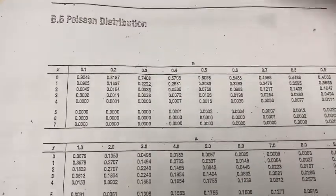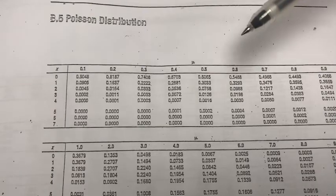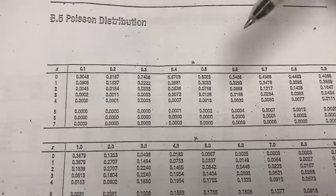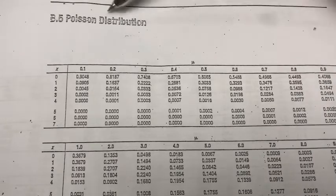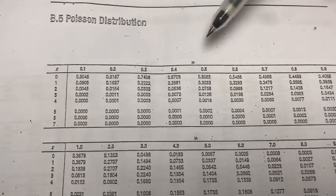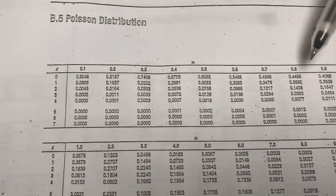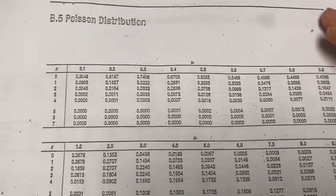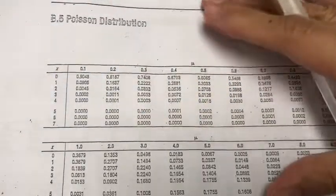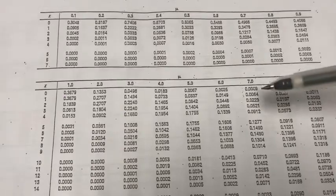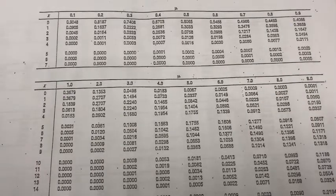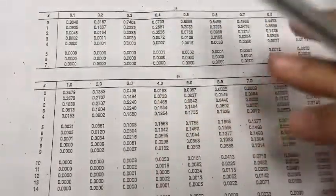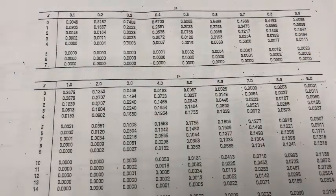Here is the Poisson distribution table, which looks different from the binomial table. For Poisson, we are not concerned with n or pi — only with mu, the rate of occurrence. The table provides several values of mu from 0.1 up to 0.9, and different values of x. As long as we can identify our mu in the table and the value of x, we can use the table. If mu is not in the table, we use the formula.